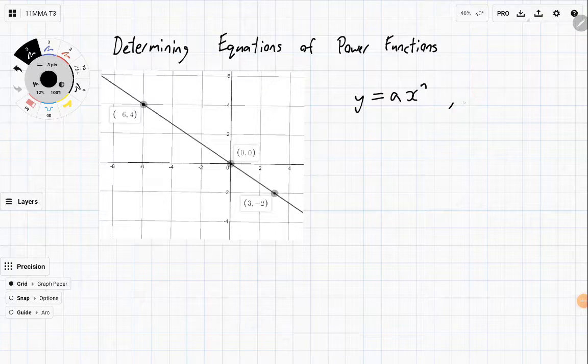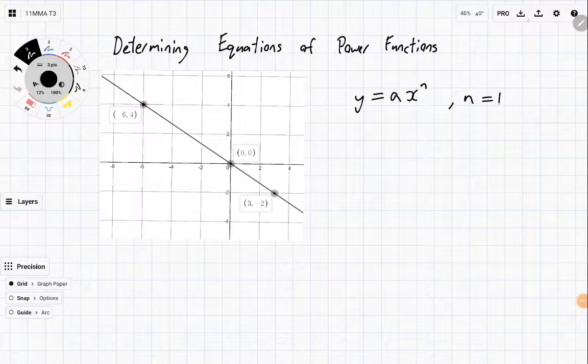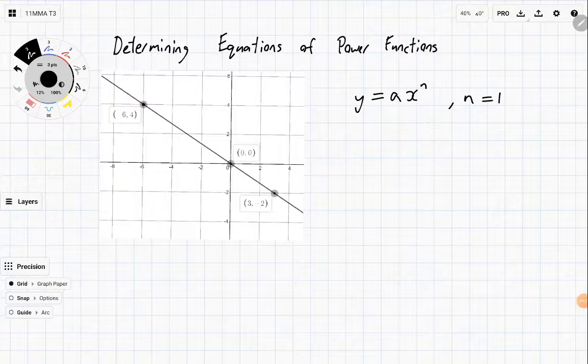For the first one, n equals 1 because it is a linear graph. You can see that in the picture, so it means we are left with y = ax.